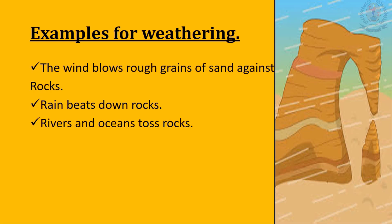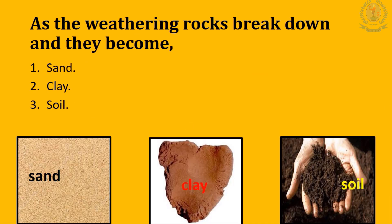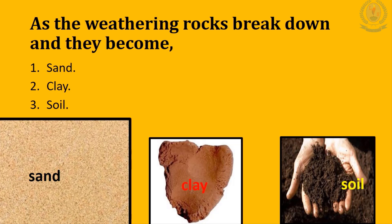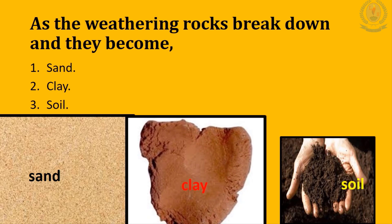Let's take some examples of weathering. The wind blows rough grains of sand against rocks, and after continuing this, they get changed. Then rain beats down on rocks. Rivers and oceans toss rocks. As the weather acts on rocks, they break down and become sand, clay, and soil.